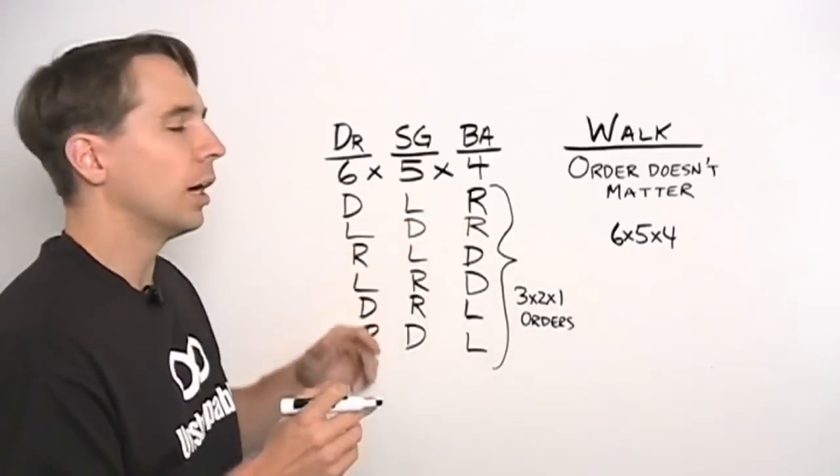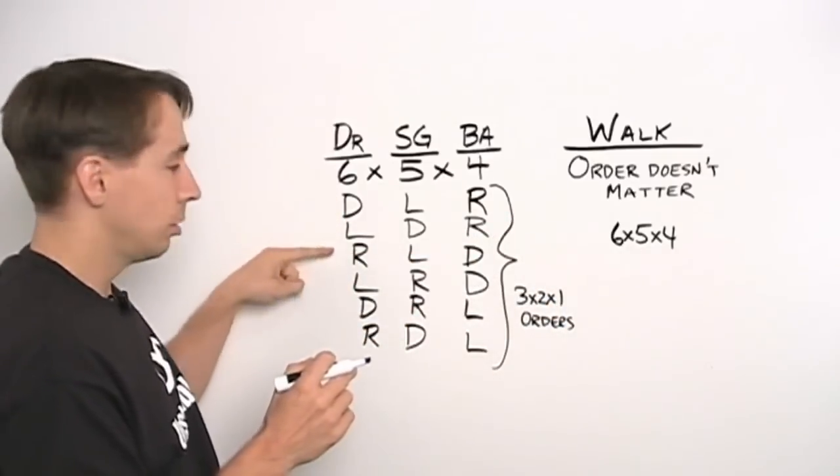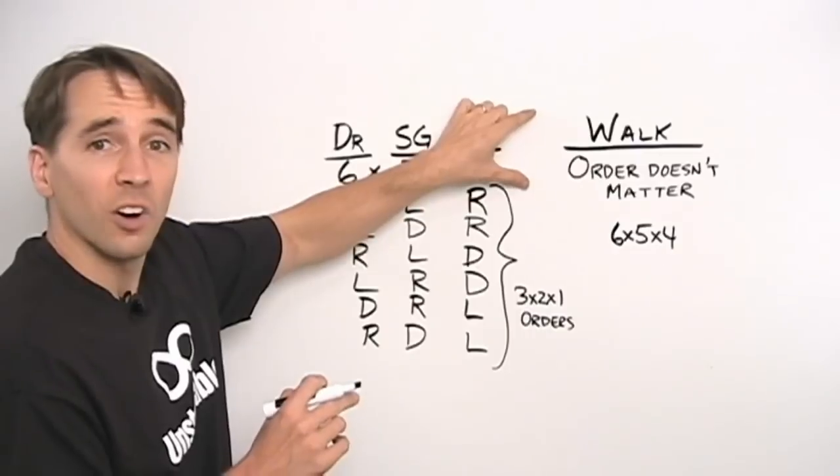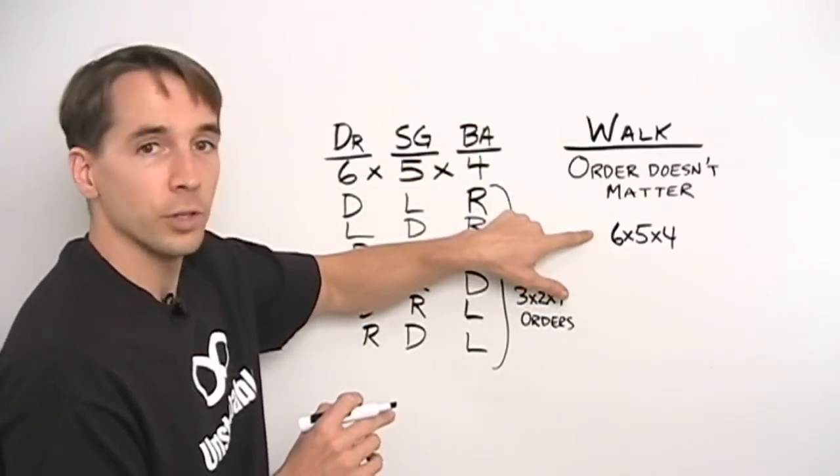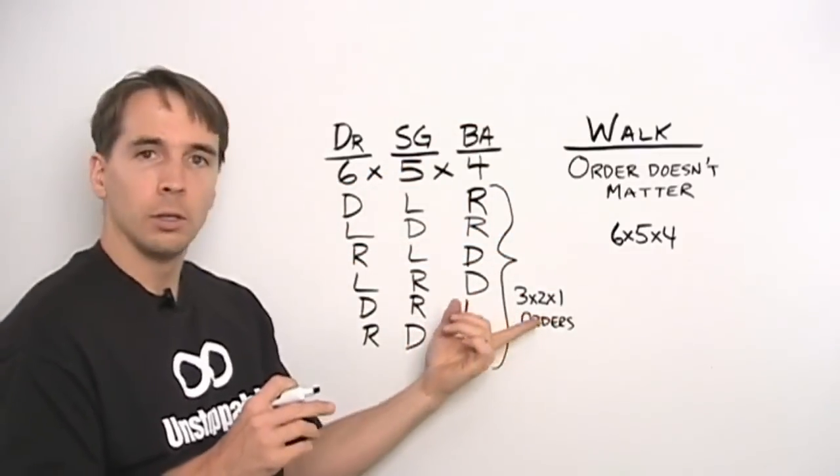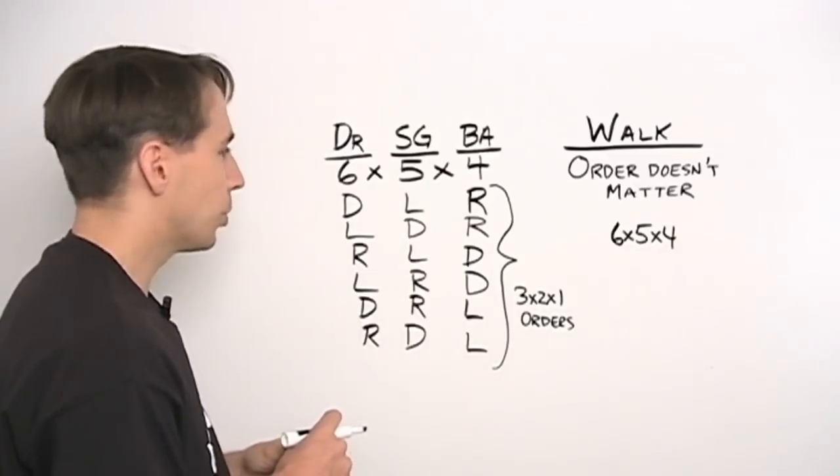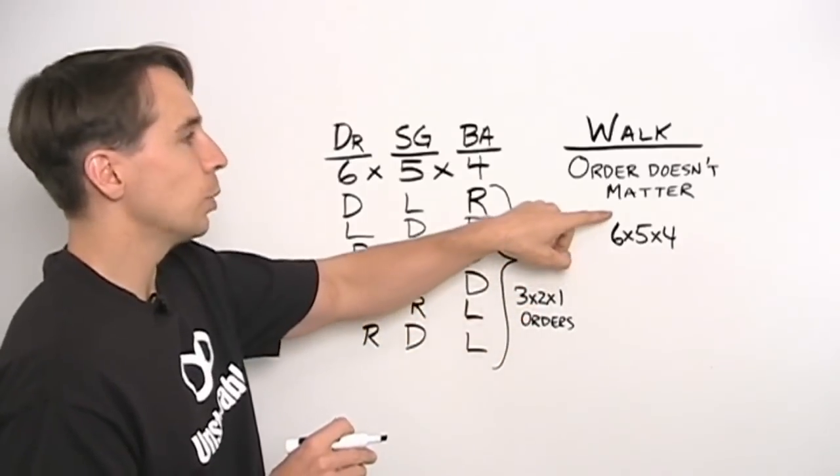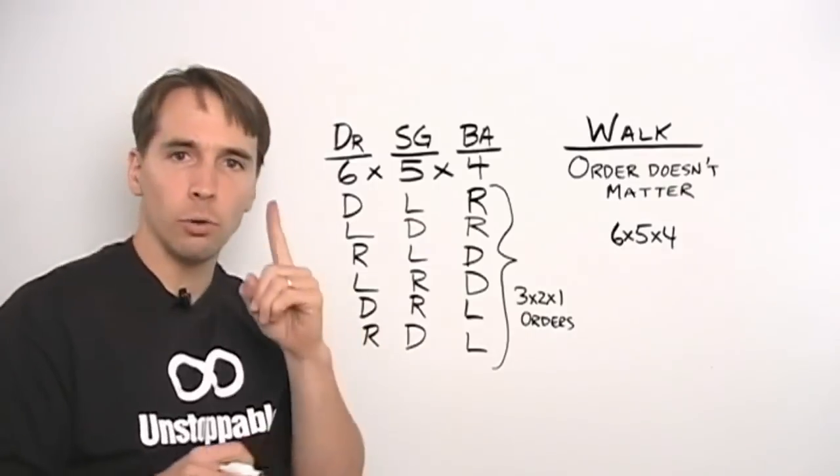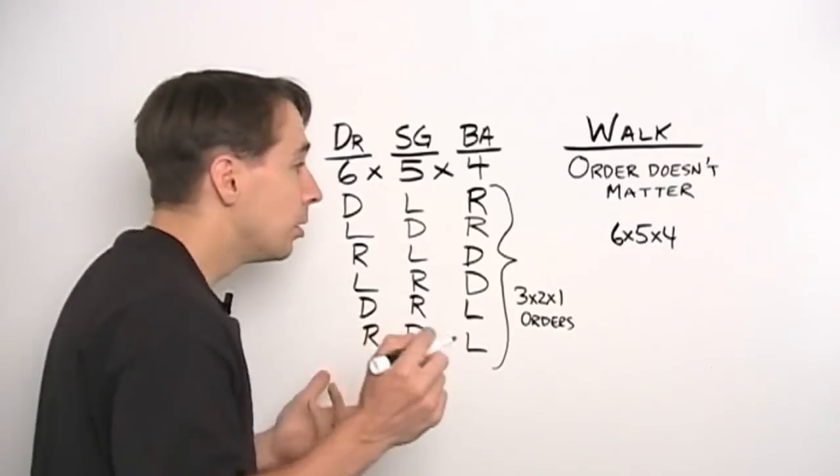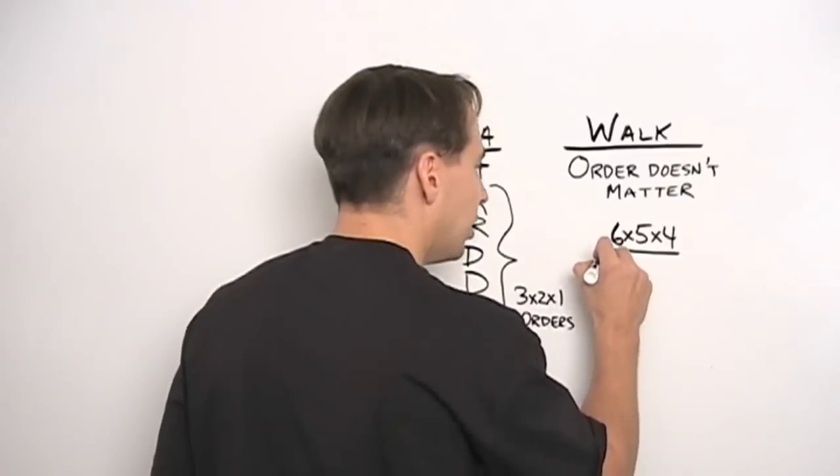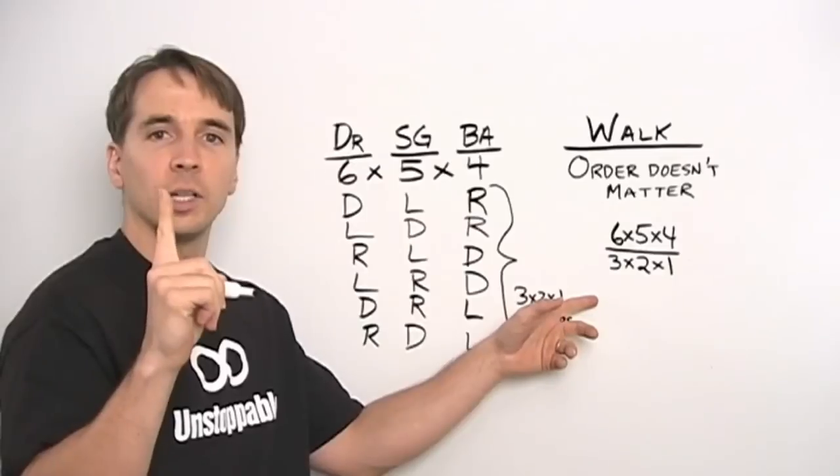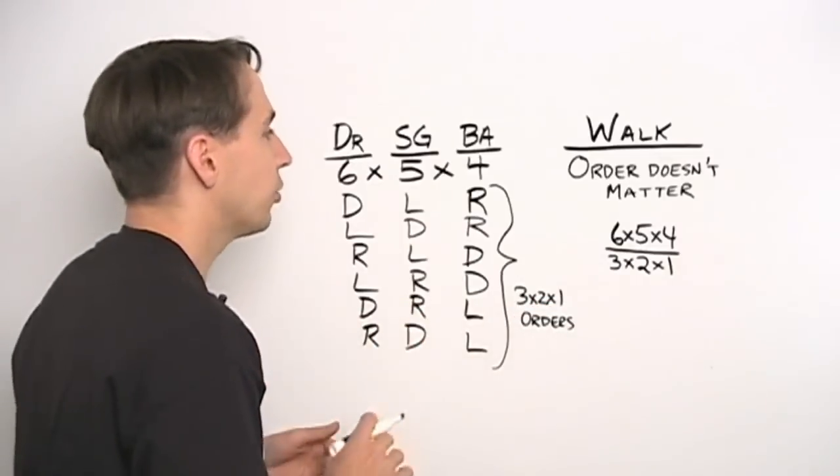For example, Dave, Larry, and I are counted here, we're counted six times, and we see that over here, we're counted 3 times 2 times 1 times, and those are all different when we're driving, but when we're walking they're all the same. So we only want to count this once over here, but 6 times 5 times 4 counts it 3 times 2 times 1 times. That's a problem. In fact, every single group, every single group of three people gets counted 3 times 2 times 1 times when we do 6 times 5 times 4. We only want to count it once, we count everything six times. We know how to fix that. If we've counted everything 3 times 2 times 1 times, all we have to do is divide, and then we'll count everything exactly once and only once, and that's the whole goal.